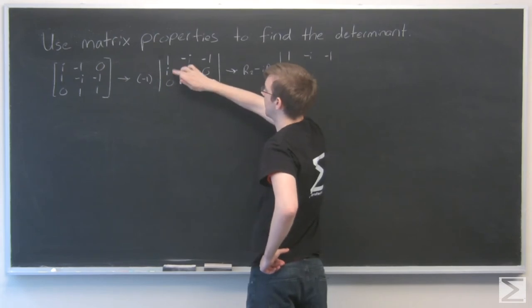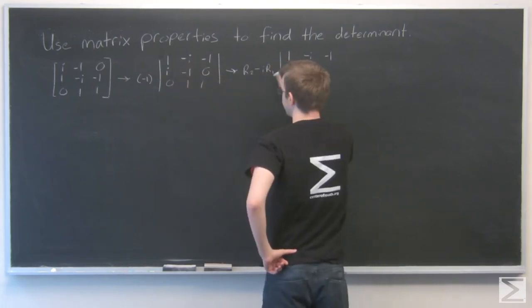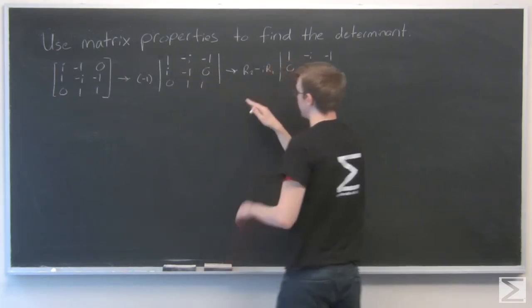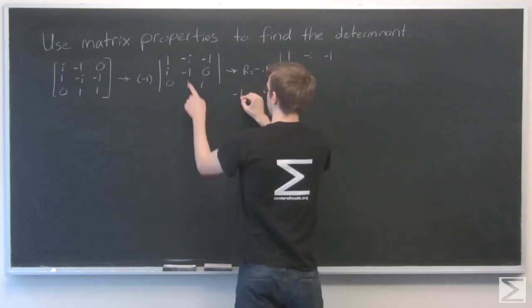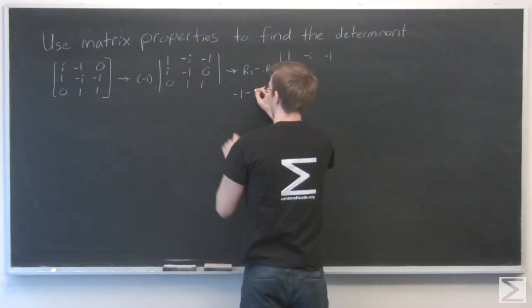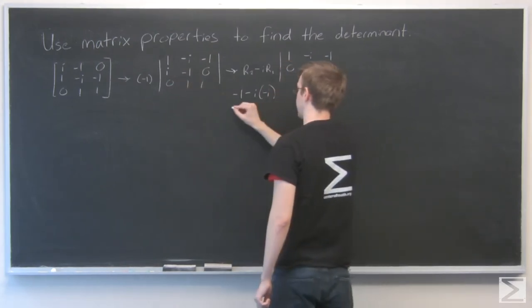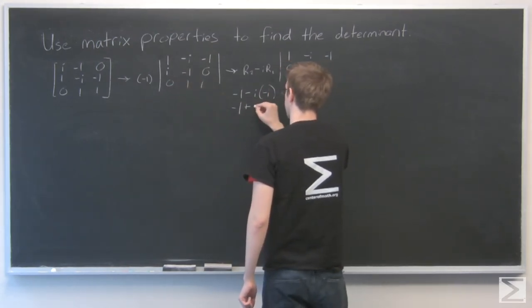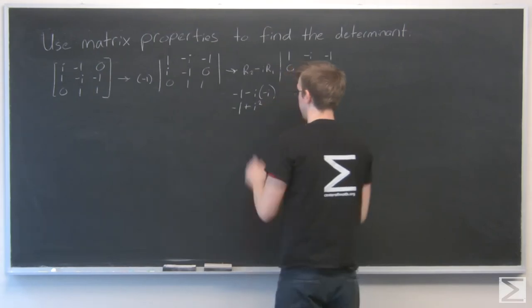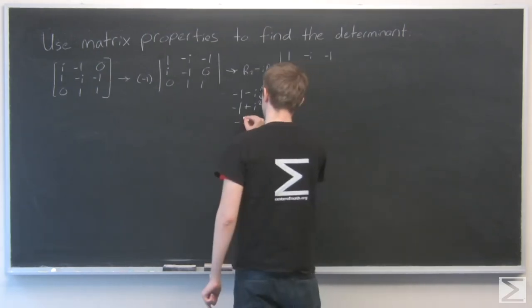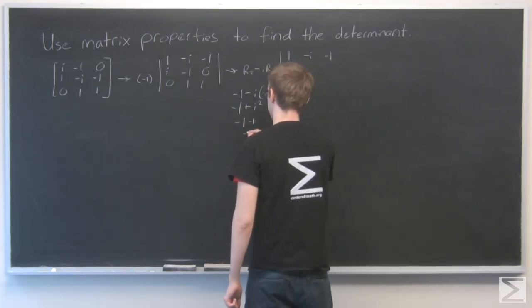i minus i times one is zero. I'm going to do this out below here. Minus one minus i times row one, which is negative i. And that's minus one plus i squared. And i squared is negative one. So that's minus one, minus one, or minus two.